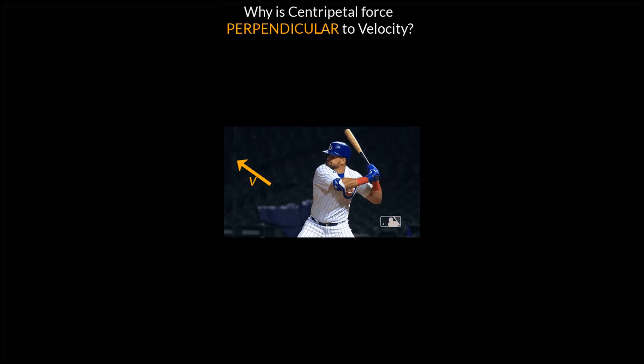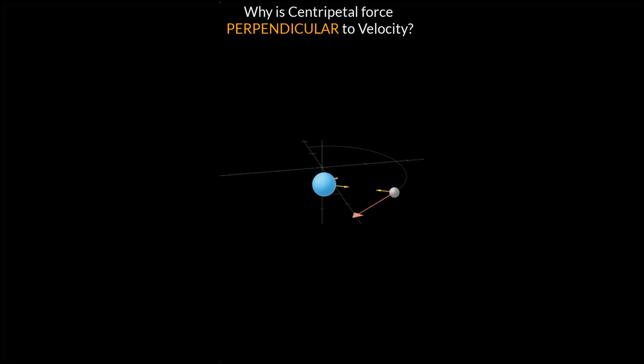We normally assume that the velocity vector should point in the direction of applied force. Then why does the centripetal force in circular motion cause objects to have velocity vectors perpendicular to it?